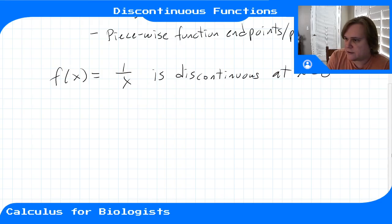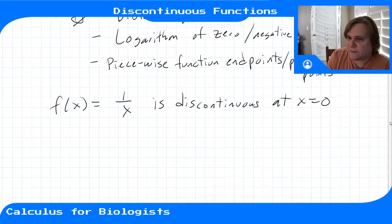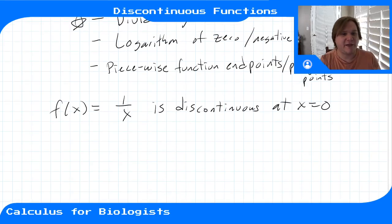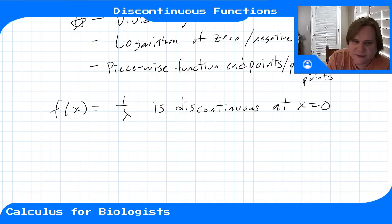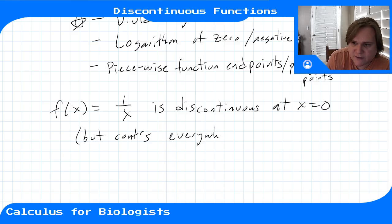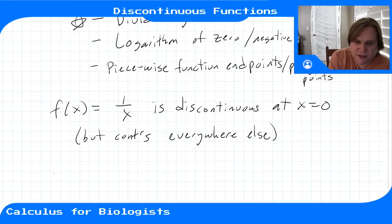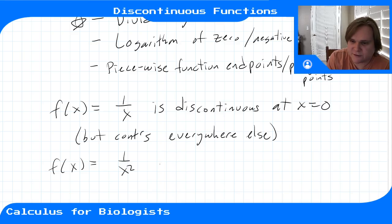At x = 0 you're trying to divide by zero, and that's a problem because you can't define the value of 1/0. It goes off to infinity as we saw with limits. It's discontinuous at x = 0 but continuous everywhere else. Another one would be f(x) = 1/x², which is also discontinuous at zero.